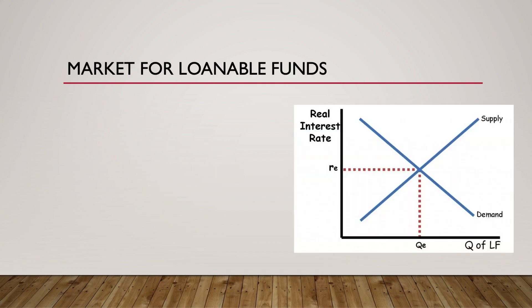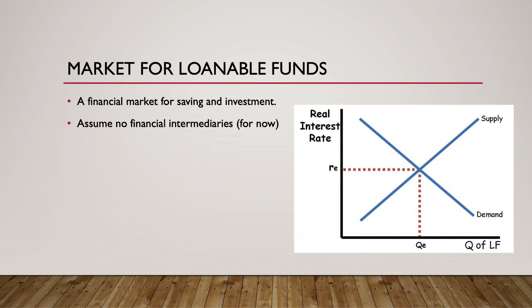Let's turn our attention now to the market for loanable funds, a financial market for saving and investment. As an initial simplifying assumption, we will assume that savers deal directly with investors. Financial intermediaries, such as banks, mutual funds, and other financial institutions, will be included later to describe the benefits of a well-functioning financial system. The market for loanable funds graph has the quantity of loanable funds on the x-axis and the real interest rate as a percentage on the y-axis.